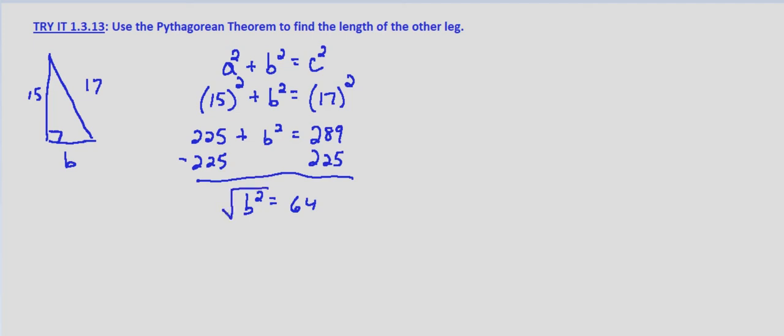We get b squared equals 64. Now simply take the square root of both sides, and we get b equals 8 units.